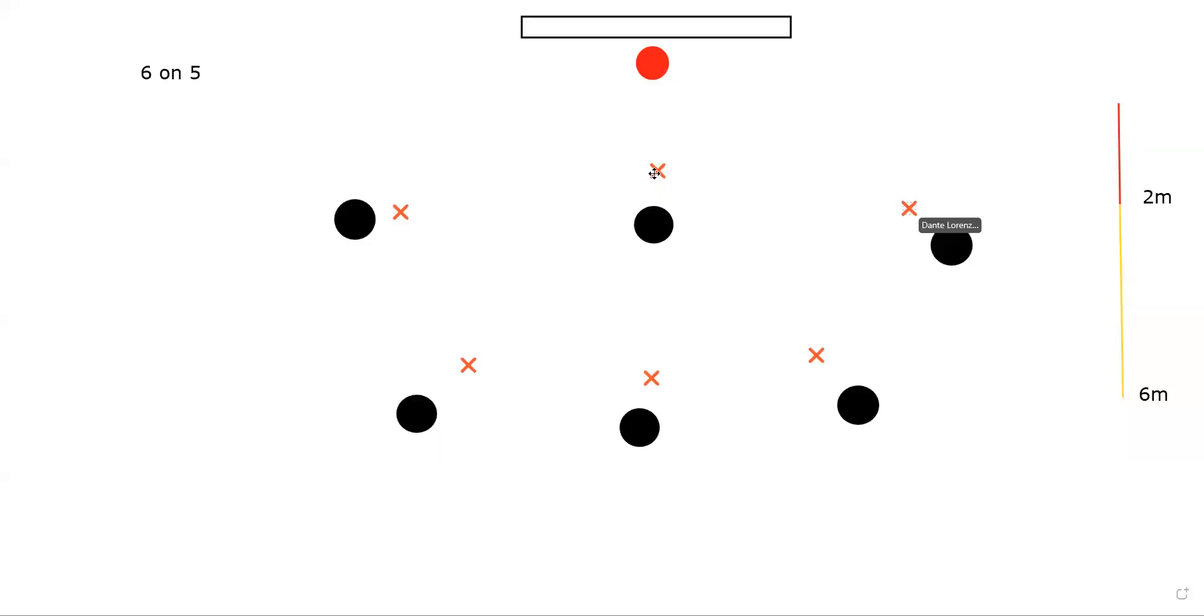Say, for example, you're on defense and one of your players gets kicked out. Your job on defense is to defend the post players that are going to set up at the two. So automatically, everybody falls back.